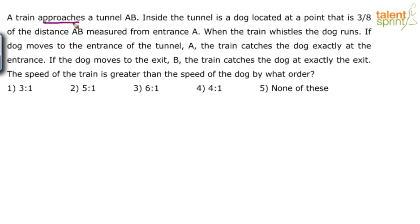A train is approaching tunnel AB, coming towards it. Inside this tunnel there is a dog located at 3/8 of the distance AB measured from entrance A. All these points are important. The dog is at 3/8 of the length of the tunnel from the entrance side, meaning 3 parts towards the entrance and the remaining 5 parts towards the exit.